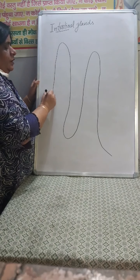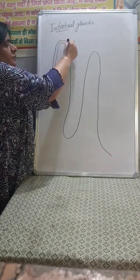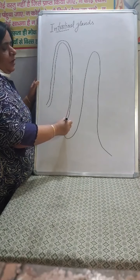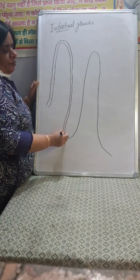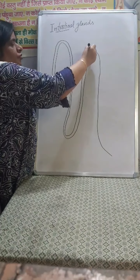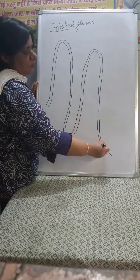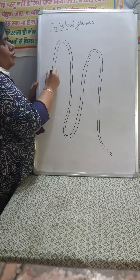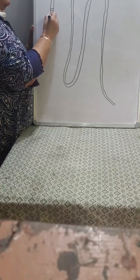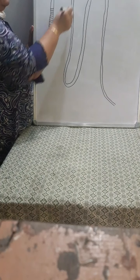These villi are lined by cells called enteric cells. They are found all over the intestine. The word 'enteric' means elementary canal. These lining cells — we will draw the cell later on. These enteric cells are found in the intestine along the villi.